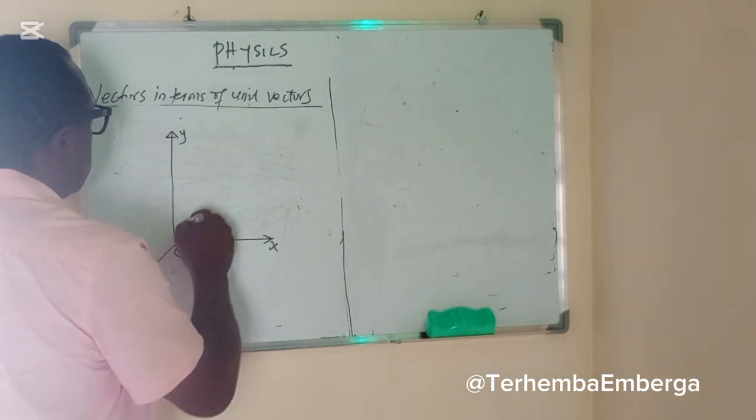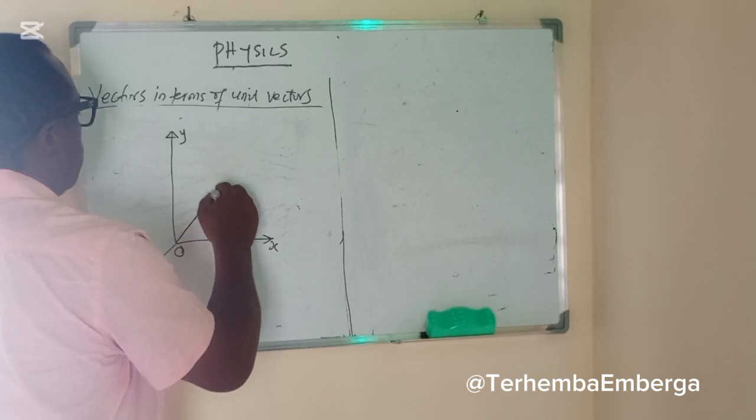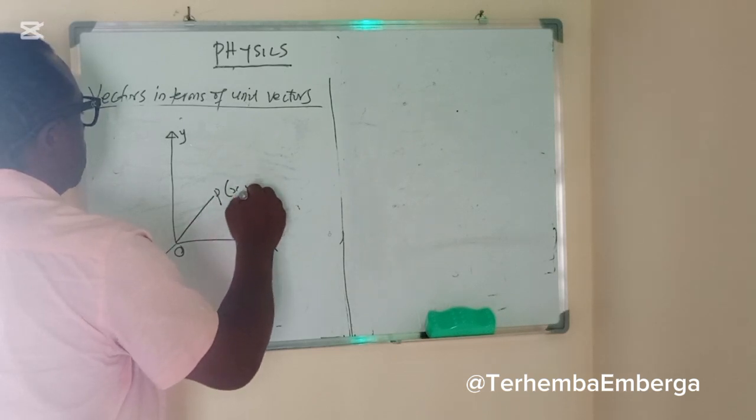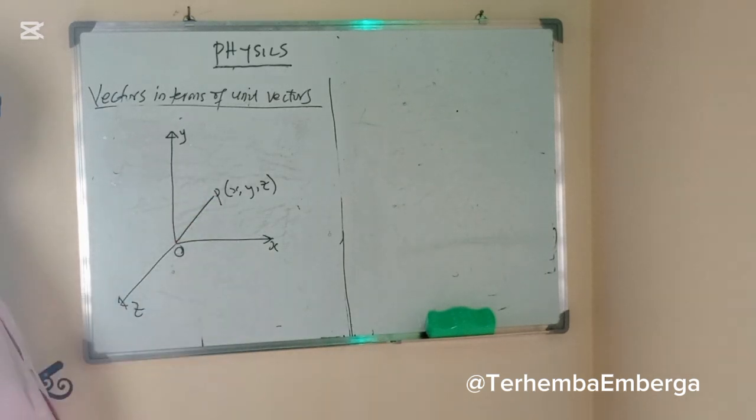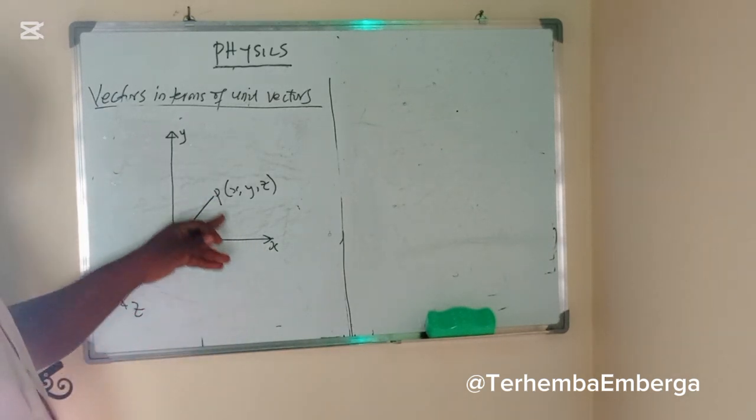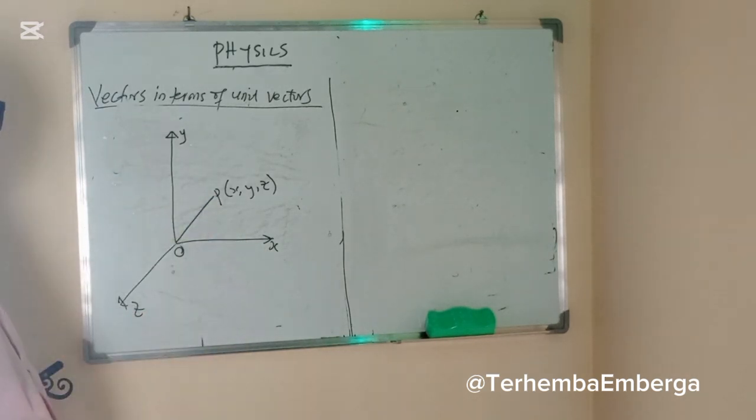Assuming we have a position vector T is X, Y, Z, this position vector is represented in the three axis we have here.